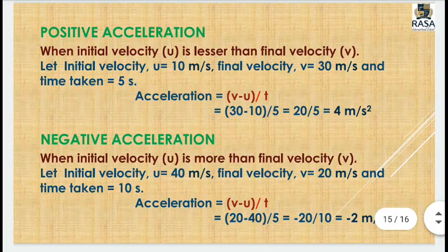Negative acceleration occurs when the initial velocity is greater than the final velocity — for example, when you apply brakes due to a red signal or an obstacle. If initial velocity is 20 m/s and final velocity is lower, then the acceleration is negative. For instance, if the final velocity is 0 and time is 10 seconds, acceleration = (0 − 20) / 10 = −2 m/s², which is retardation.